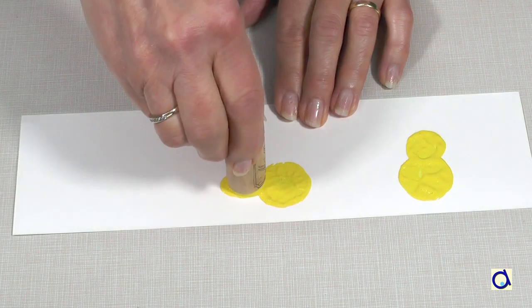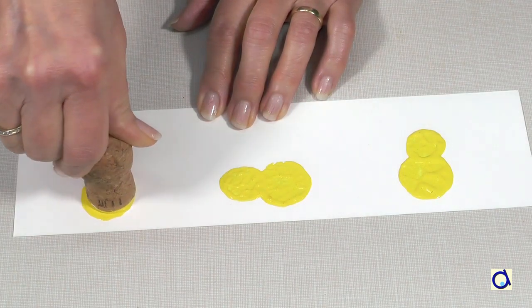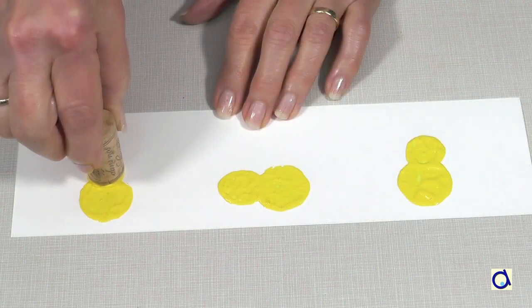Keep making impressions to have three or four chicks along the strip of paper. I represent two standing chicks and a pecking chick.